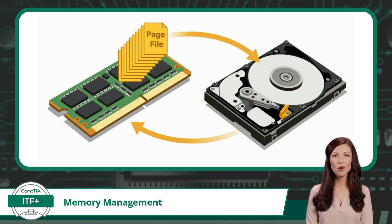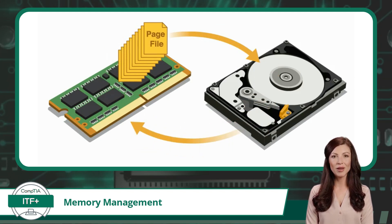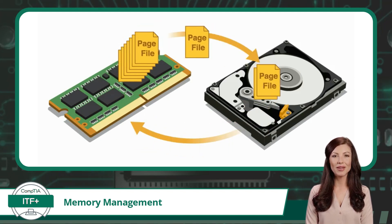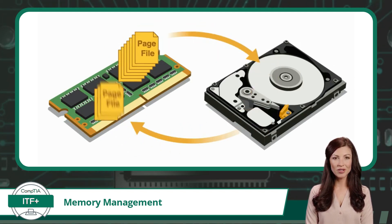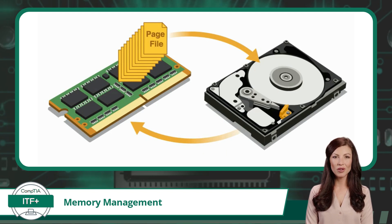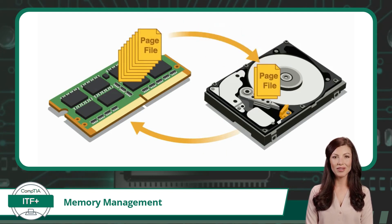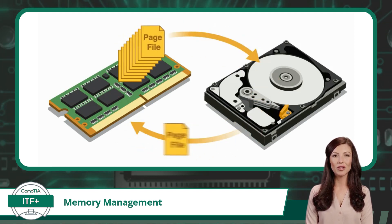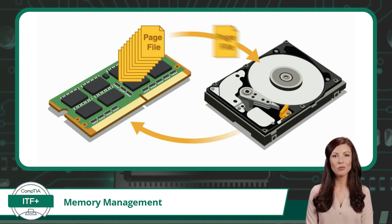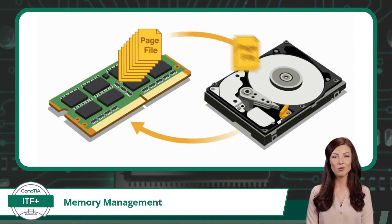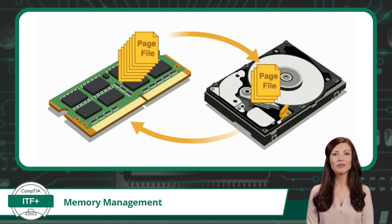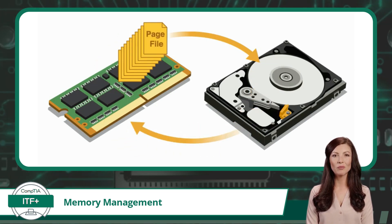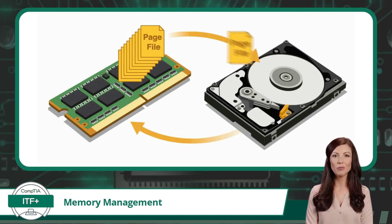When a program requires more memory than the available RAM, the operating system temporarily stores the less frequently used or inactive pages of that program in the page file. This frees up space in the physical RAM to accommodate the more actively used pages of other programs.